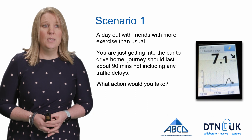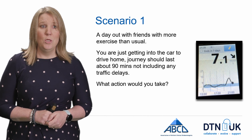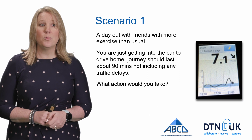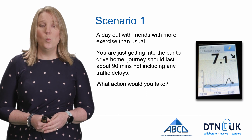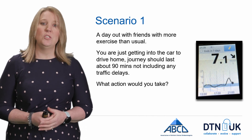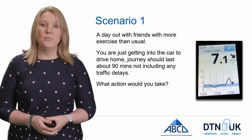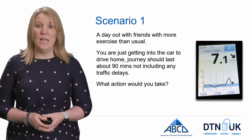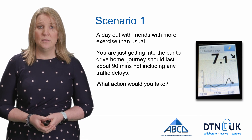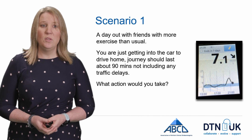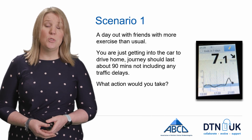Scenario one: a day out with friends doing more exercise than usual. You are just getting into the car to drive home — the journey should last approximately 90 minutes, not including any traffic delays. What action would you take? How confident do you feel? What does the blood glucose level mean in relation to the DVLA safety guidance? We know levels need to be above 5 mmol/L before driving legally. What does the arrow mean? Given the arrow is in a downward direction, where will that bring you in 90 minutes? Is there any action you need to take now?